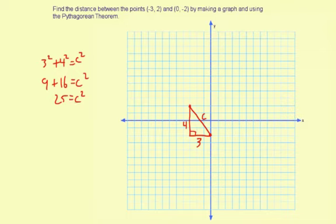Then to solve for C, we're going to take the square root of both sides. So square root of 25 equals C. Square root of 25, 25 is a perfect square, 5 times 5. So 5 equals C.